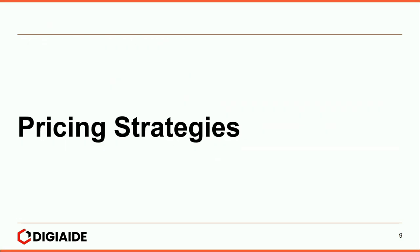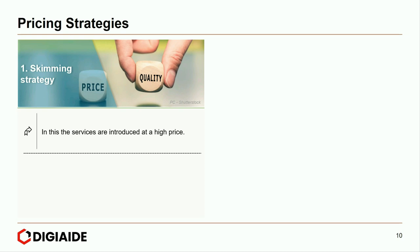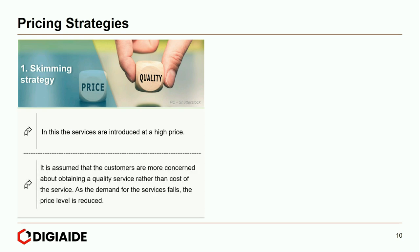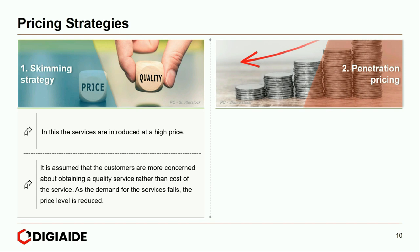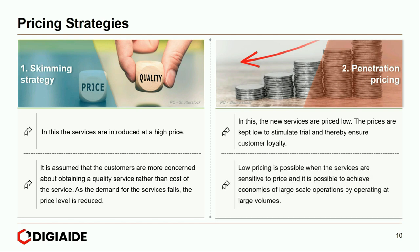Now moving on to the pricing strategies — seven of them that cater specifically to the service industry. The first is the skimming strategy, where services are introduced at a high price. It is assumed that customers are more concerned about obtaining quality service rather than the cost. As demand falls, the price level is reduced. Next, penetration pricing — new services are priced low to stimulate trial and ensure customer loyalty. Low pricing is possible when services are price sensitive and economies of large-scale operations can be achieved. This works best for low-fare airlines, for example Southwest Airlines.